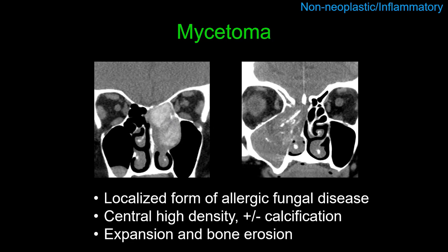Another inflammatory process that can be mass-like is the mycetoma, a form of non-invasive allergic fungal sinusitis that is localized, confined to a single sinus or contiguous sinuses. The key feature in these often expansile, mass-like lesions is the presence of central high attenuation and sometimes calcification. These can grow very big and be associated with significant bone erosion — a case with aggressive-appearing destruction of the ethmoid complex, skull base, and nasal septum ultimately proved to be just another mycetoma, underlining the importance of recognizing central high density and calcified contents.